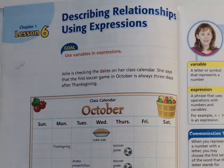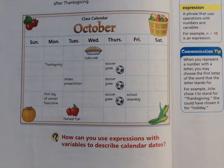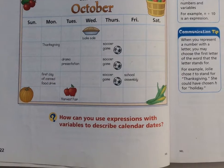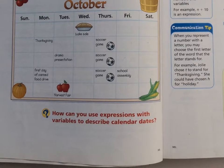Let's read our example. Jolie is checking the dates on her class calendar. She says that the first soccer game in October is always three days after Thanksgiving. So that's the introduction. The question is: how can you use expressions with variables to describe calendar dates? Here is the bake sale, here's Thanksgiving, and one, two, three days after Thanksgiving is a soccer game. There's also a drama presentation, school assembly, harvest fair, and a can drive.